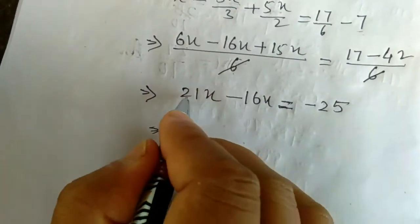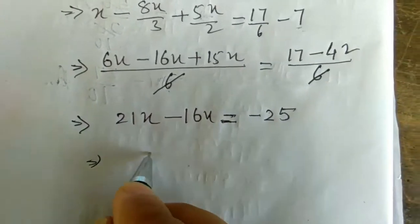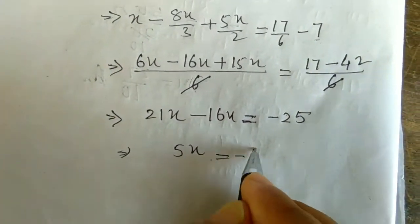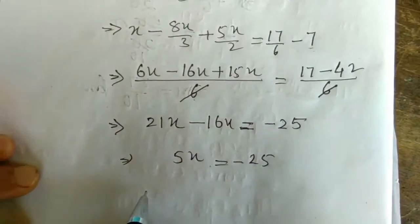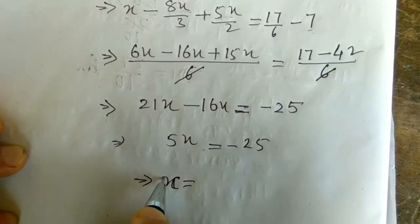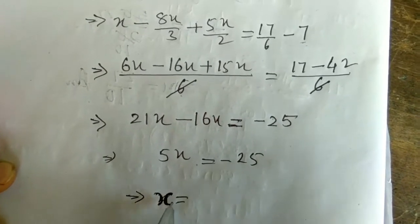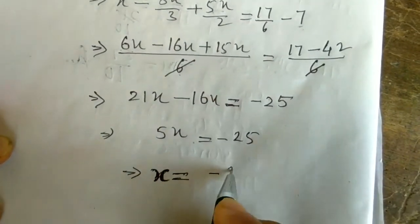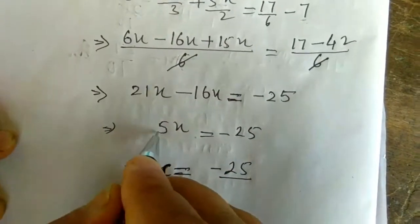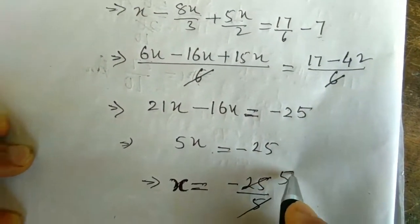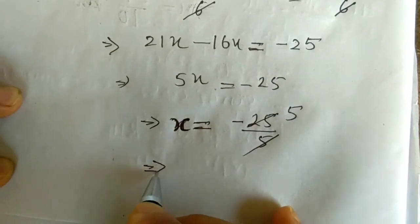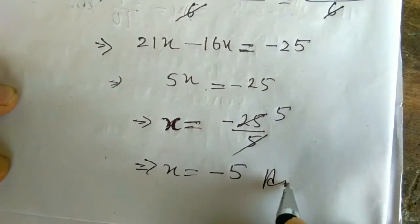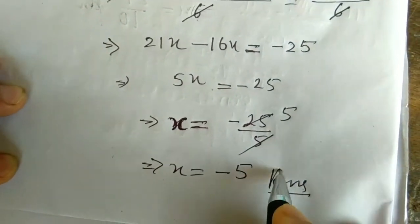So 5x = -25. Therefore x = -25/5 = -5. So x = -5. This is the answer for question number 3.